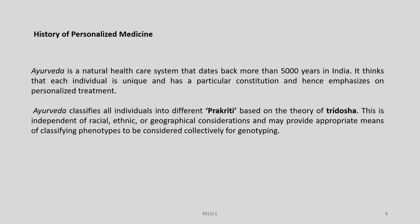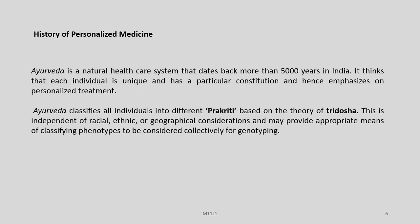Let us have a small peek into the history of personalized medicine. As I already told you about Hippocrates, the idea of personalized medicine is actually not very new. Ayurveda is a natural healthcare system that dates back more than 5,000 years in India. It holds that each individual is unique and has a particular constitution and hence emphasizes personalized treatment. Ayurveda classifies all individuals into different Prakriti based on the theory of Tridosha. We have to understand that Ayurveda is not based on the genetic concepts on which personalized medicine is today based. But nevertheless, it had some idea that every individual is very unique and at least they fall into certain classes.